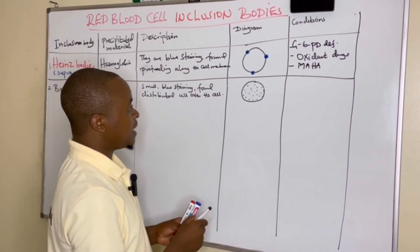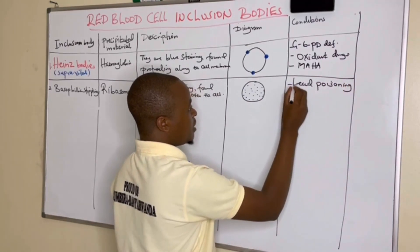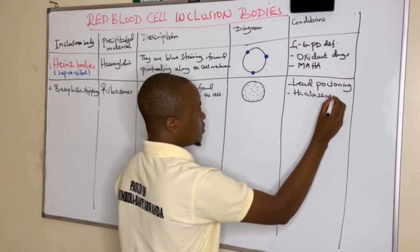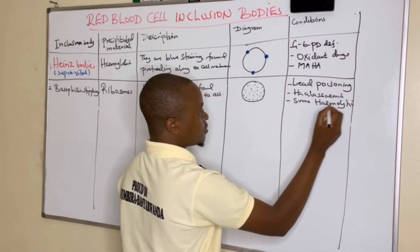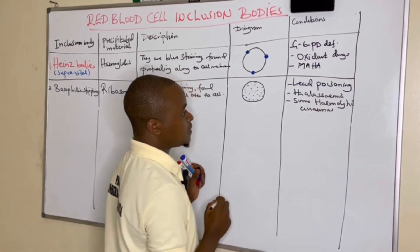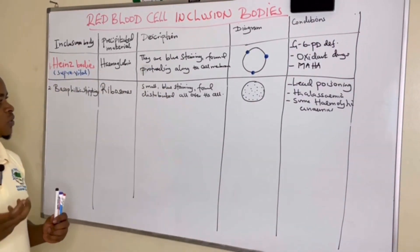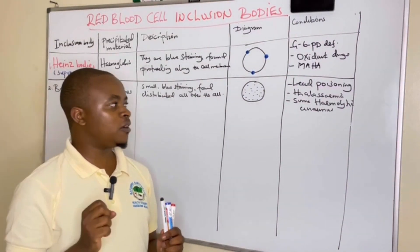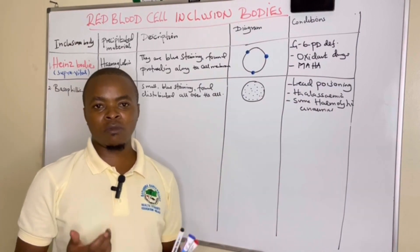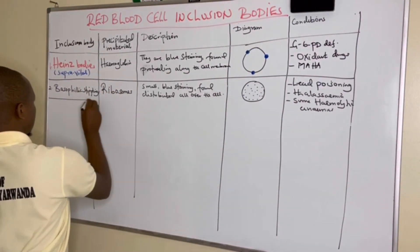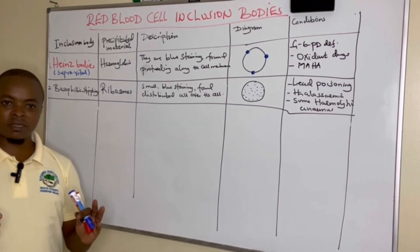Basophilic stippling is found in conditions like lead poisoning, thalassemias, and some hemolytic anemias — like sickle cell disease. These bodies are very small, blue staining, and found distributed all over the cell. The precipitated material is ribosomes, which is why this condition is also called punctate basophilia.